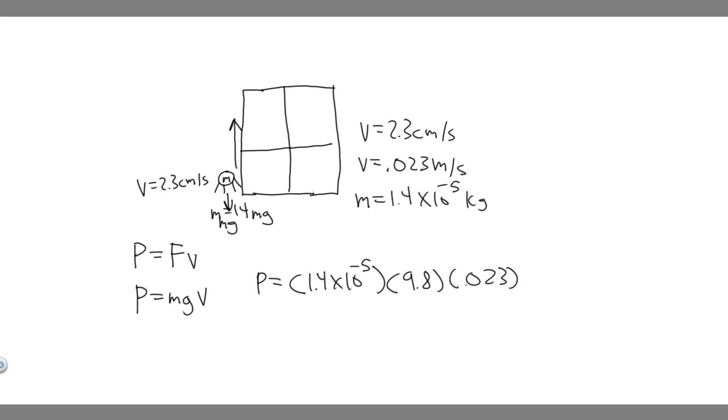So go ahead and plug this in: 1.4 times 10 to the minus 5, times 9.8, times 0.023. When you do this, what you're going to get is the power is going to equal 3.1556 times 10 to the minus 6.